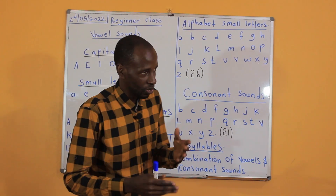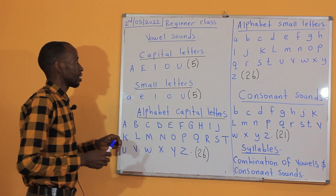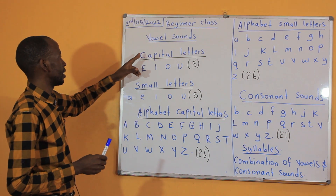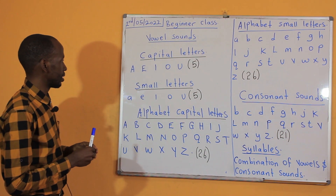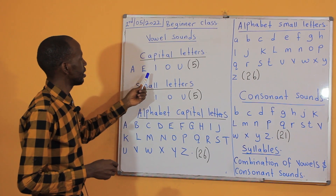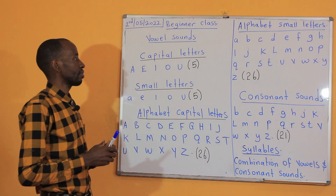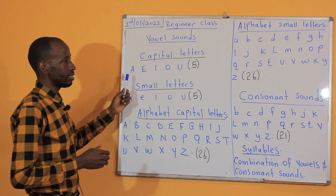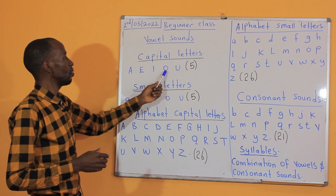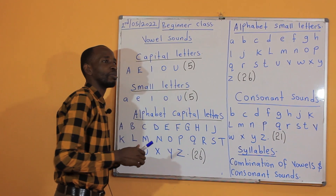Let's go to pronunciation — how do you pronounce them? I'm starting with capital letters. This is A, E, I, O, A. Let me explain about this sound.